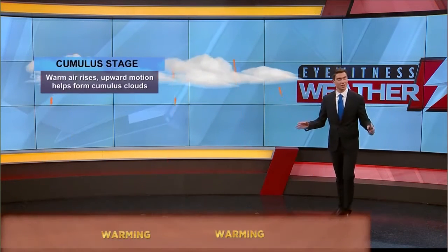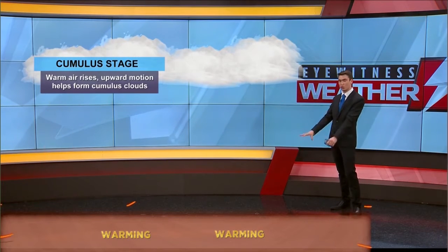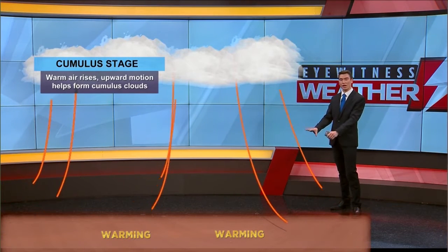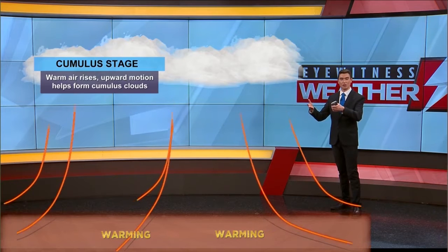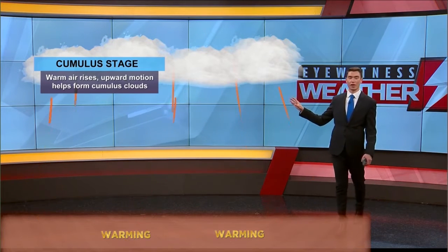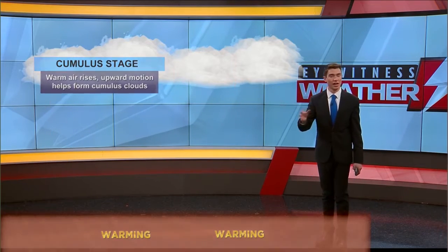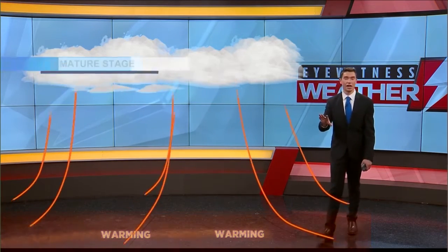Let's talk about the formation of a thunderstorm and oftentimes the life cycle that we see during the spring and summer months. Obviously it starts with the sunshine — that's the key factor to get those clouds to form. That sunshine heats the surface of the earth, and that warm rising air rises to the condensation level, and that's where we start to see those clouds forming. That's when we often see cumulus clouds forming at this stage.